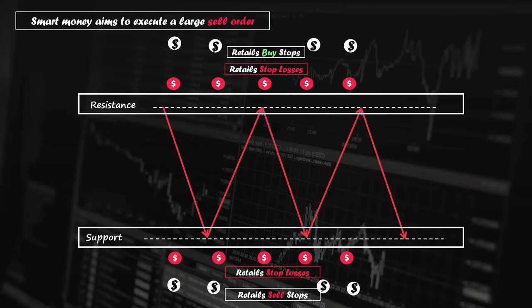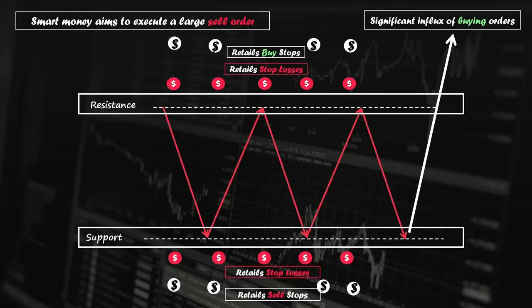Let's consider that smart money aims to execute a large sell order. As the price attempts to move upward towards the buy-side liquidity, it breaks through the resistance level, triggering the stop-losses of retail traders who had opened short positions. Simultaneously, it activates the buy-stops of traders who execute buy orders as the price fails to respect the resistance level. This generates a significant influx of buying orders, presenting a great opportunity for smart money to execute their sell orders. By initiating numerous sell orders, smart money causes the price to enter the markdown phase and push downward — illustrating how smart money capitalizes on buy-side liquidity.